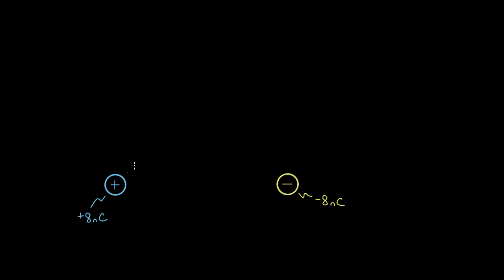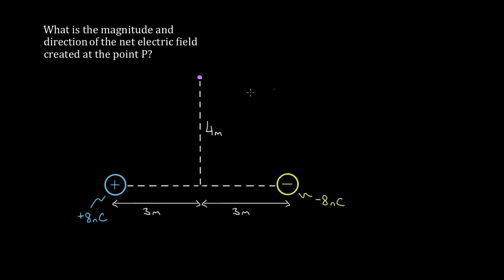Let's try a hard one. This one's a classic. Let's say you had two charges, positive eight nanocoulombs and negative eight nanocoulombs, and instead of asking what's the electric field somewhere in between, which is essentially a one-dimensional problem, we're gonna ask what's the electric field up here at this point P?